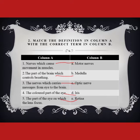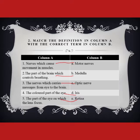Next definition: the nerves which carry messages from the eye to the brain. These nerves which bring signals from the eye to the brain are the optic nerves. 'Optic' refers to the eye.